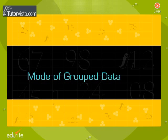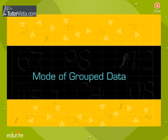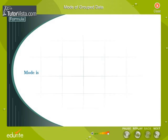Mode of grouped data. Mode is a measure of central tendency which gives the value of the observation having the maximum frequency.